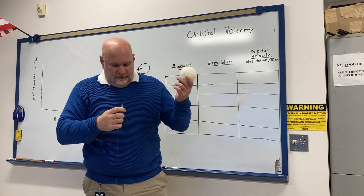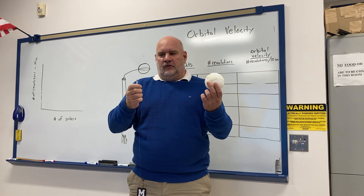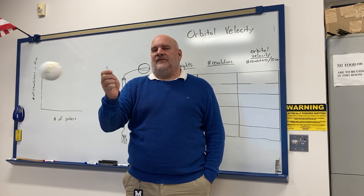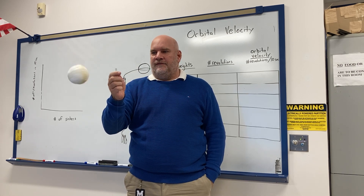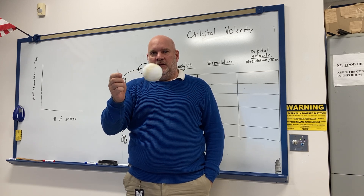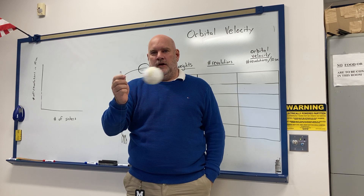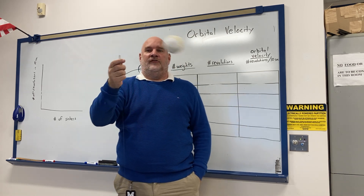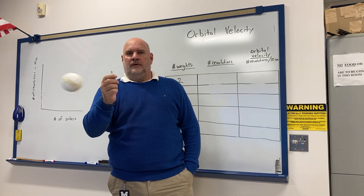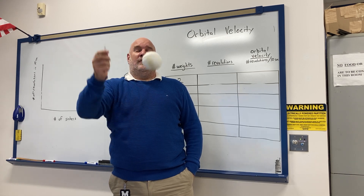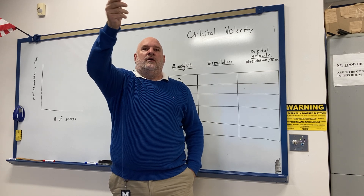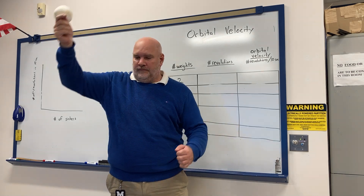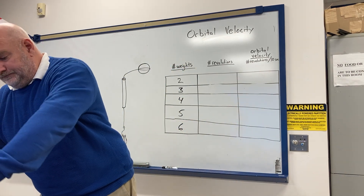Another thing to point out: for all my trials I kept the ball about a foot away from the tube — that's a constant you have to keep during this lab. If on the first trial the ball was really close to the tube, and in the next trial it was farther out, that would change your results. The closer the ball is to the tube, the faster it goes; when it's farther away it goes slower. So the farther the body is out, the slower it has to go in orbit to stay in orbit.